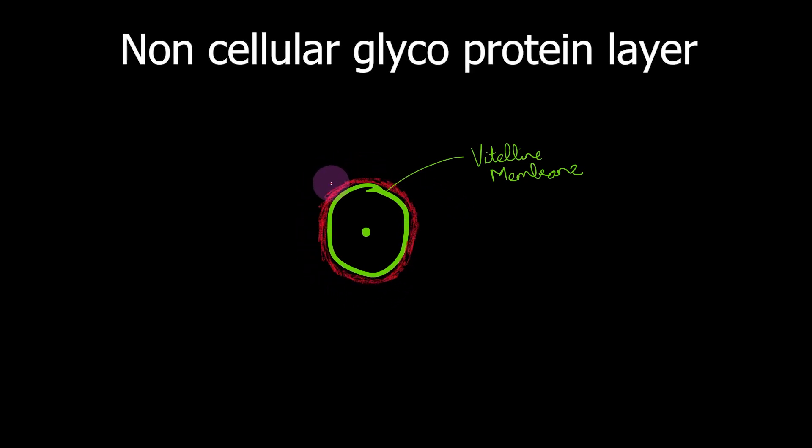What you see here is an oocyte and the membrane, the plasma membrane of that oocyte cell is known as the vitelline membrane. Now around this vitelline membrane you have a non-cellular layer shown by this red color and that is known as the zona pellucida. Zona pellucida means a transparent zone.